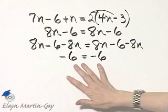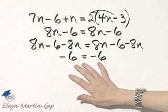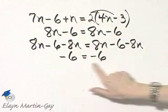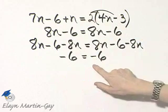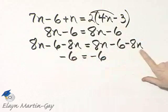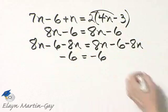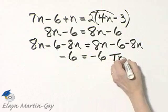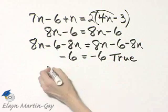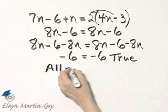Notice at this point all of your variable terms subtracted out. Now if all your variable terms subtract out and you end up with a false statement, the answer is no solution. If all of your variable terms subtract out and you end up with a true statement, such as this one, all real numbers are solutions.